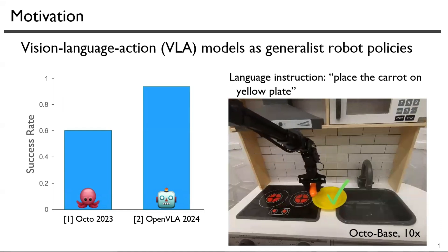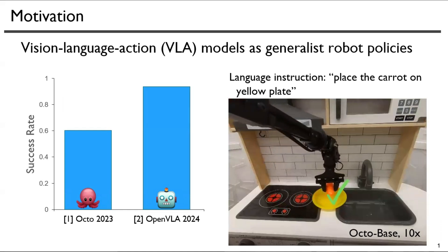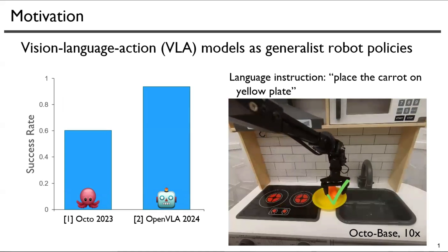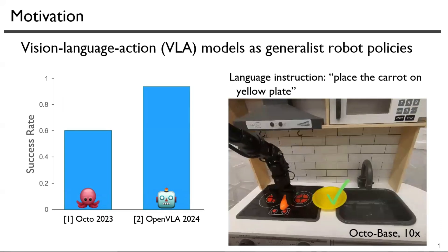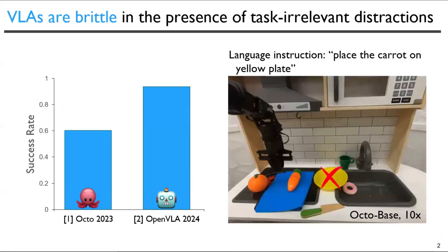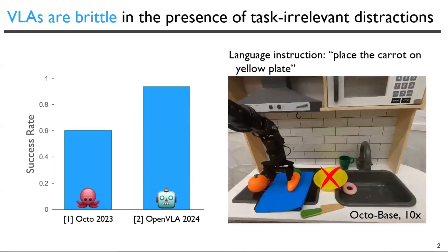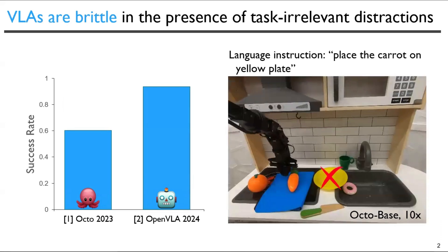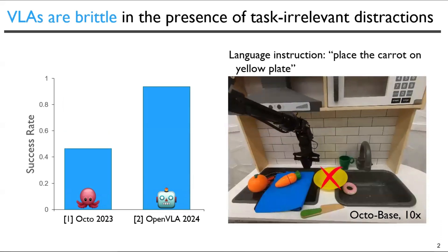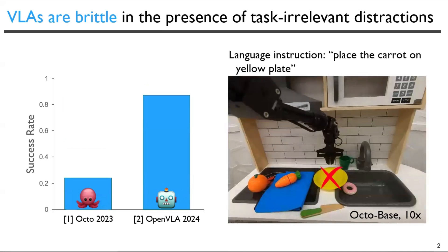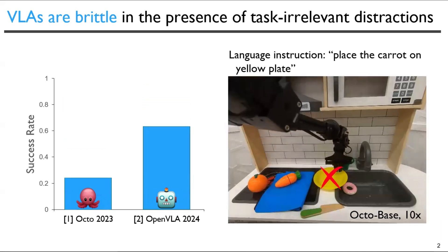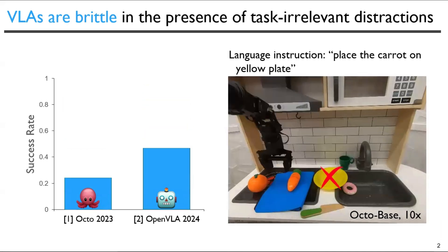For instance, models like Octo or OpenVLA can out-of-the-box perform simple tasks like placing the carrot on the yellow plate. However, performance can significantly drop when deployed in environments containing a small number of distractor objects or background colors unseen during training.